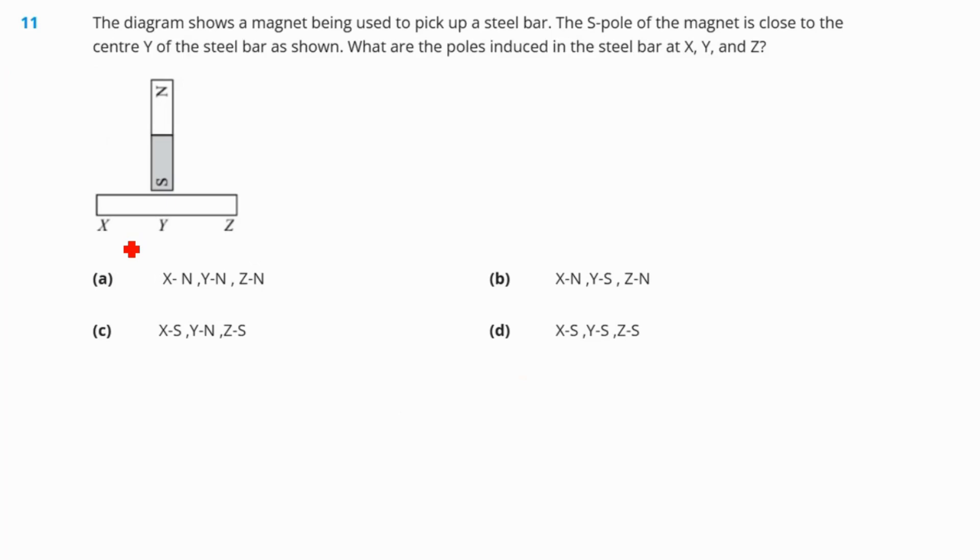Question number 11. The diagram shows a magnet being used to pick up a steel bar. The S pole of the magnet is close to the center Y of the steel bar as shown. What are the poles induced in the steel bar at X, Y and Z? As the south pole of the magnet is touching Y of the steel bar, Y should get the north pole. If Y is getting the north pole, that means Z should have the south pole and X also should get the south pole. So our answer is option number C.